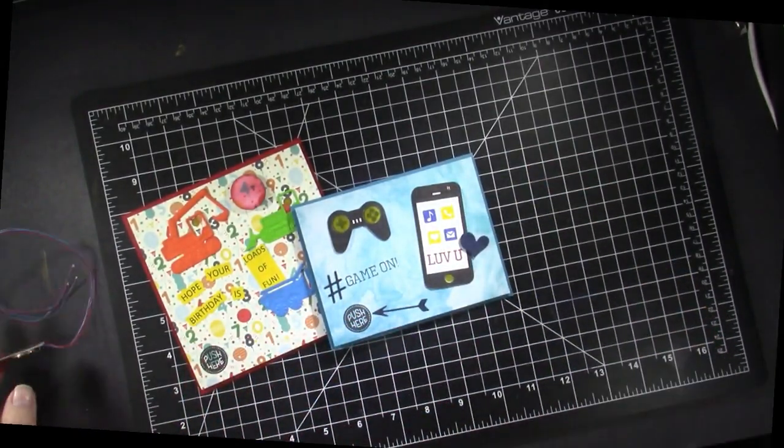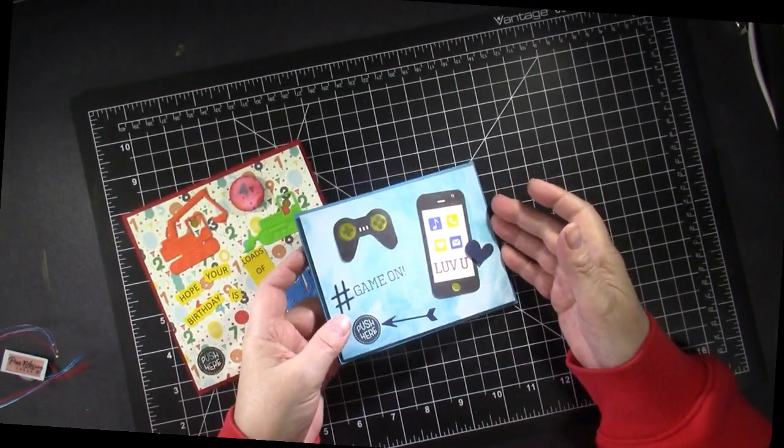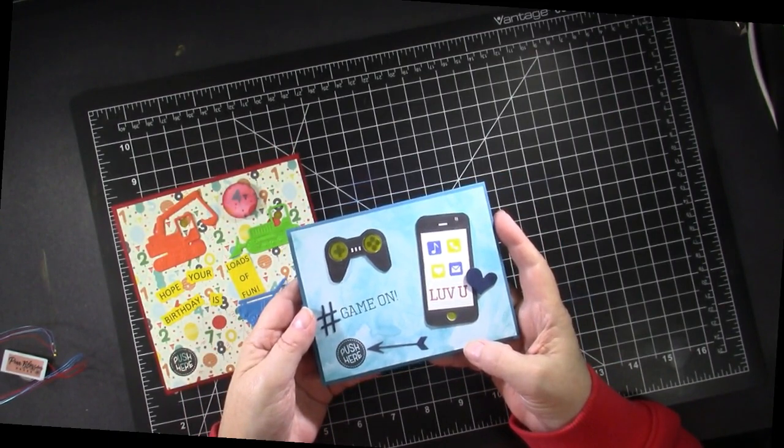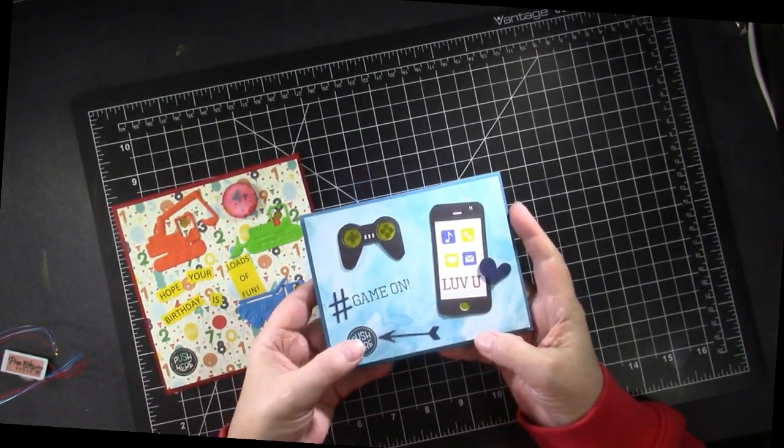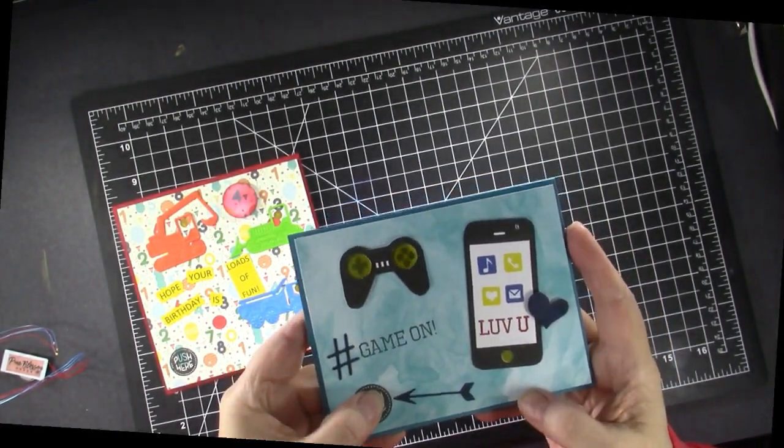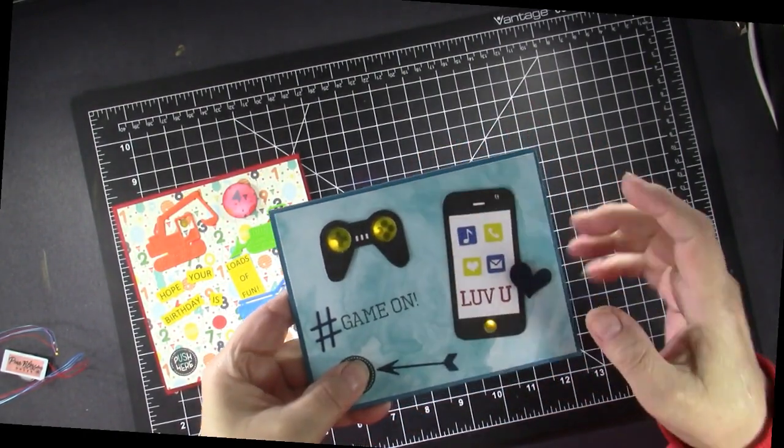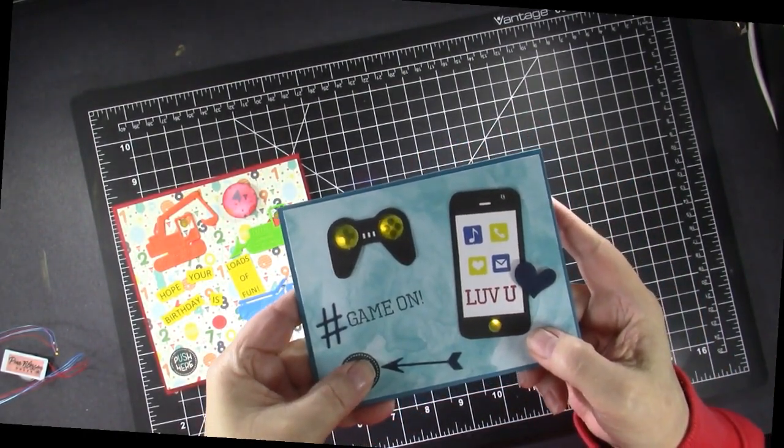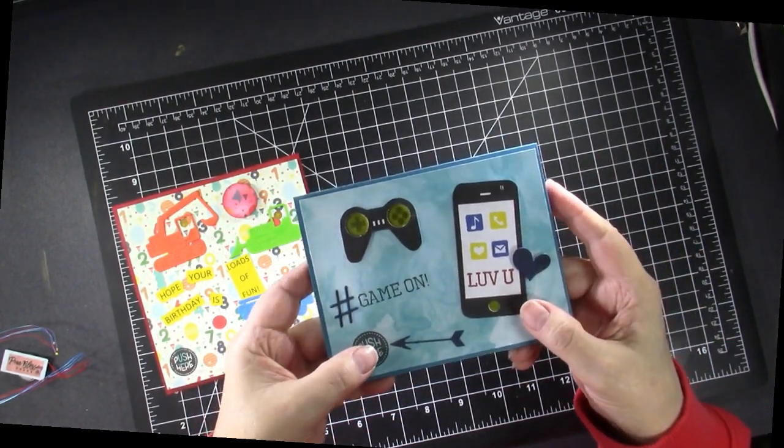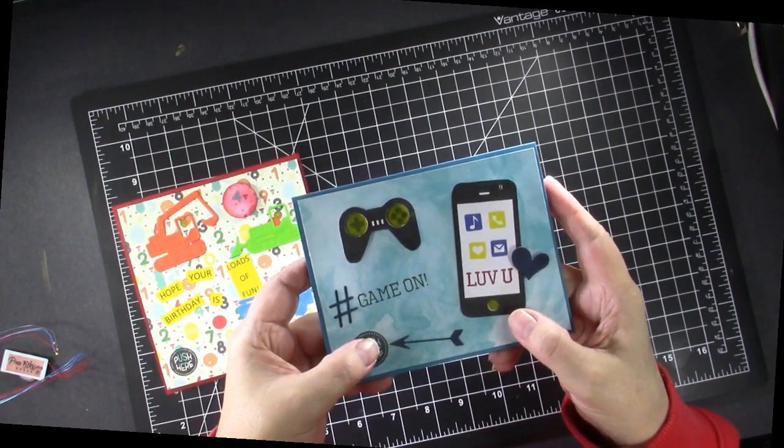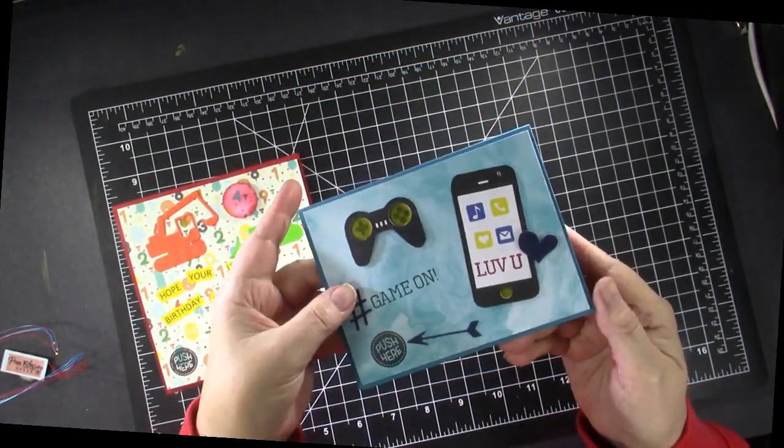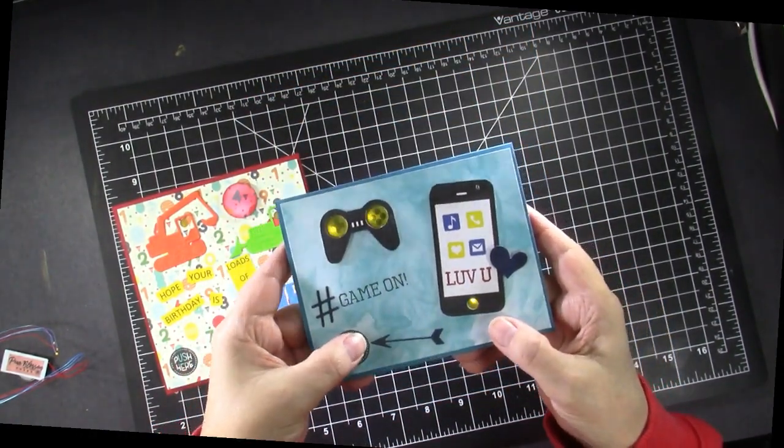My first example of a card that I made is for my teenage grandson who is into video games and his phone as are most teenagers. So you push here and I'm going to assume you can see those lights on the video game and the phone light up. All the details on this card, the products I used will be on my blog and there will be a link to that of course in my description box. I just think that's really cool. On the inside I have 'you light up my world' and again that's for my teenage grandson.